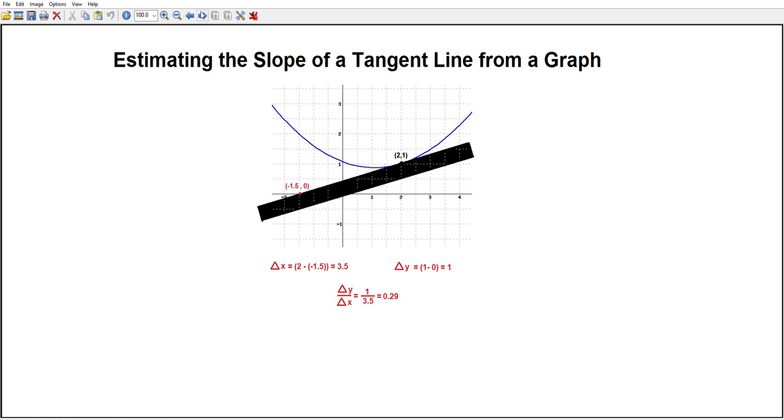Delta y over delta x is 1 over 3.5, which to two decimal places is 0.29, which is our estimate for the slope.